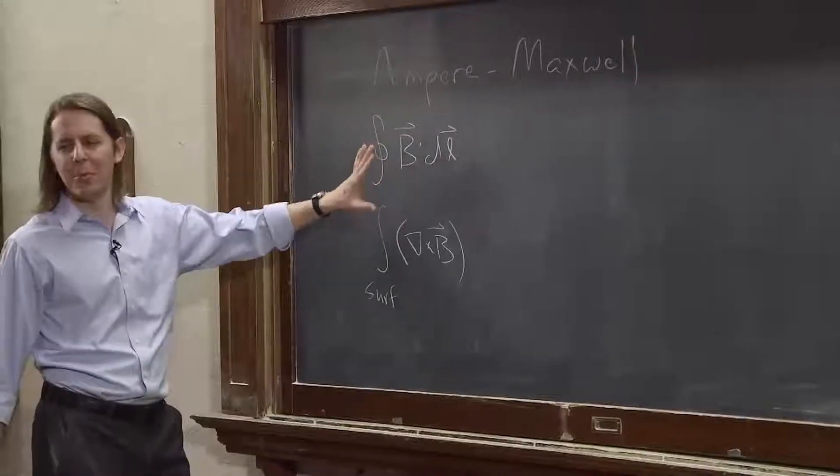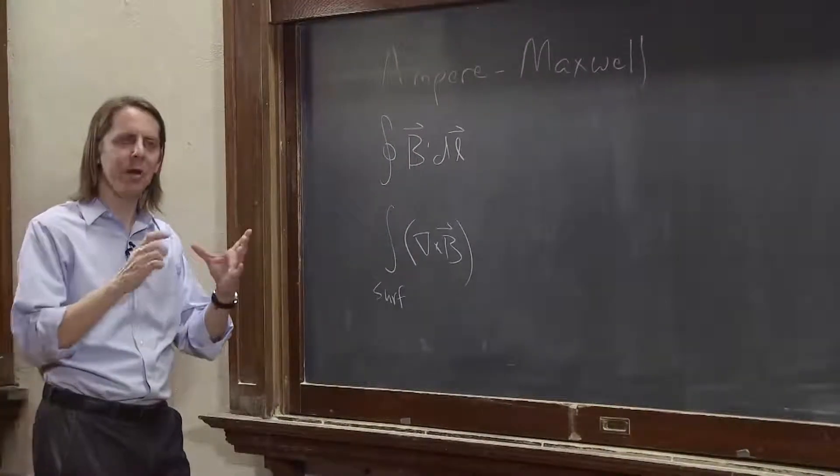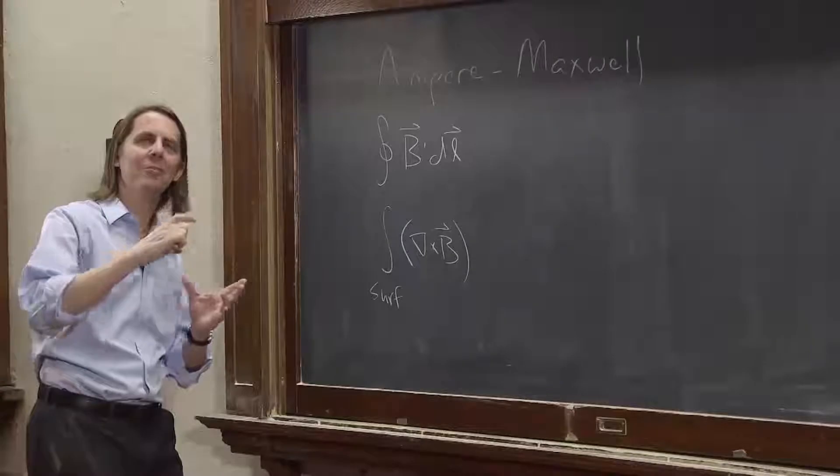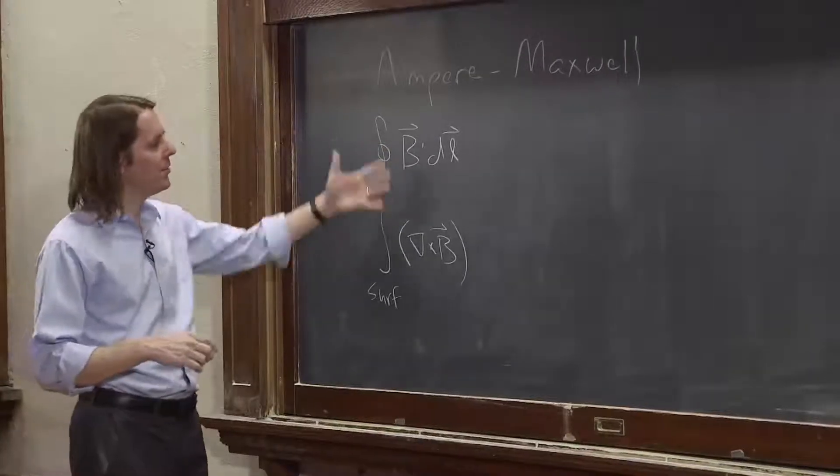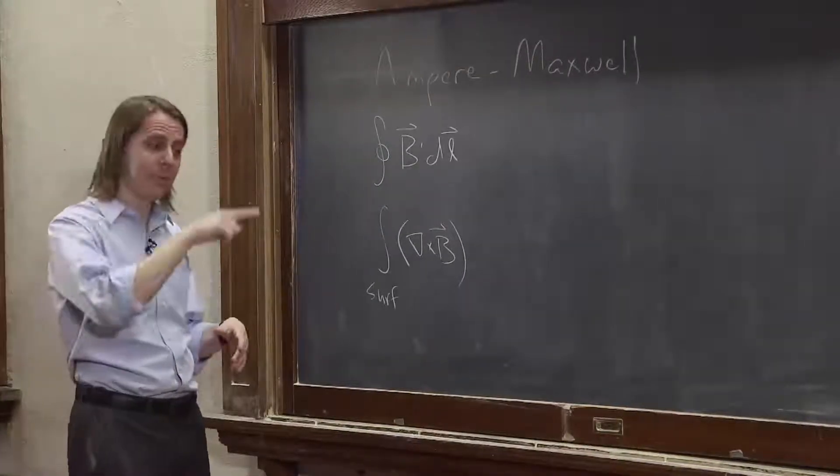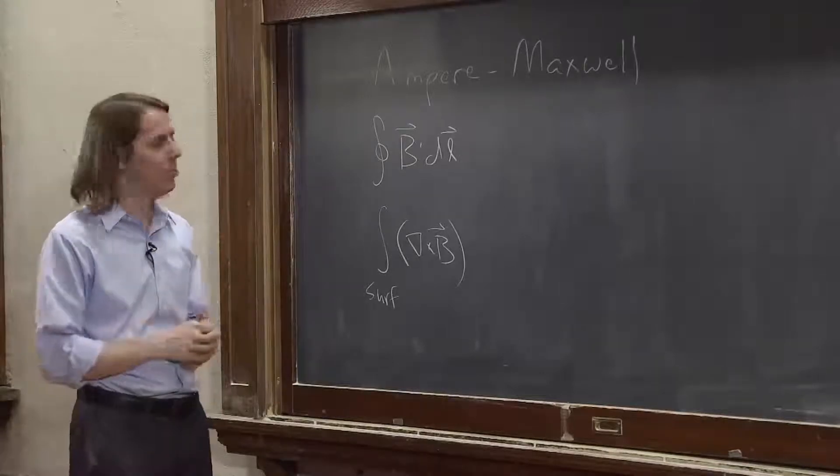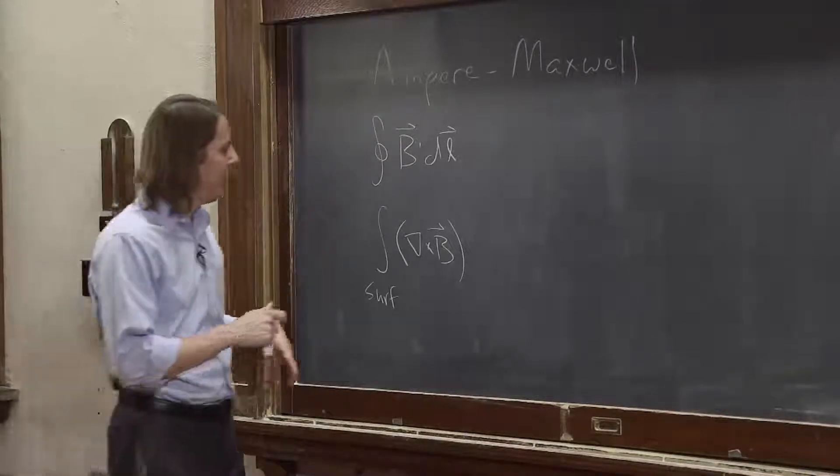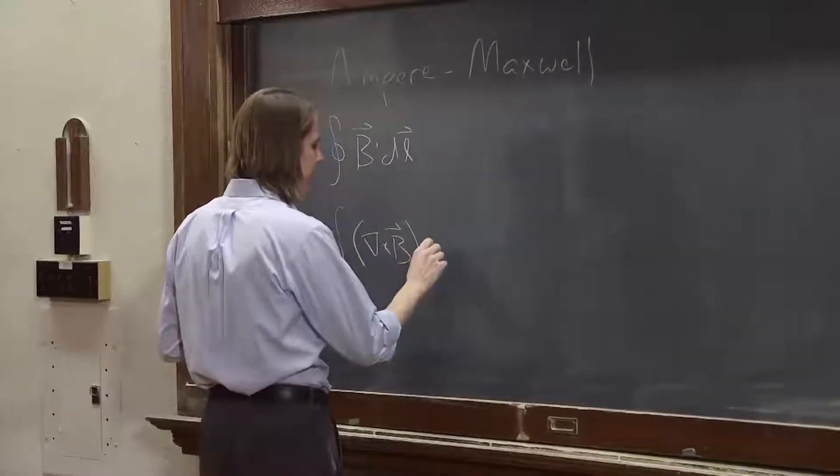So thinking about it this way made a little more sense for the electric field, because we really thought of the curled E-field as an EMF pushing something around. Here, it's not quite as direct. But we're thinking about a B-field going around a loop when we do Ampere's law. So integral of del cross B dA.